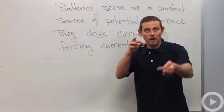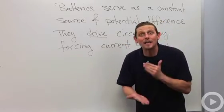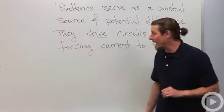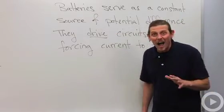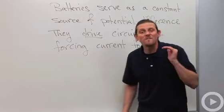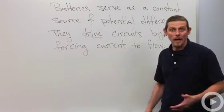And once the current gets to the other side, it just bumps it up to the top again because it's got to keep that same potential difference, 1.5 volts. So they drive the circuits by forcing the current to flow. And that's potential difference.